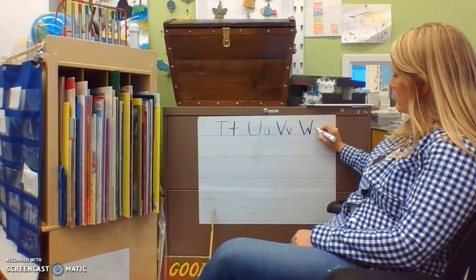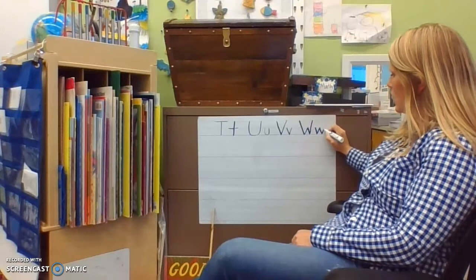For my little W, I start in the middle, little line down, little line up, little line down, little line up.